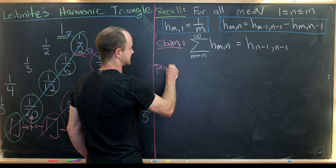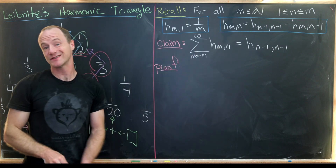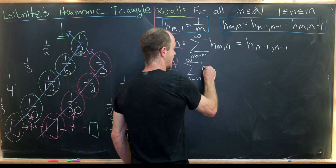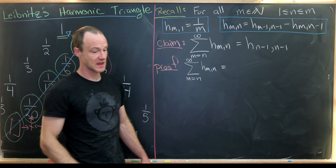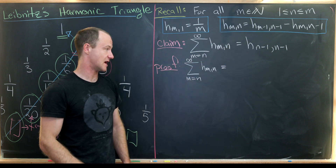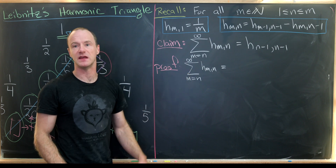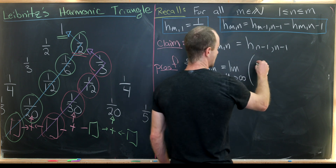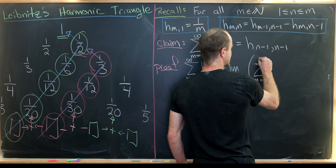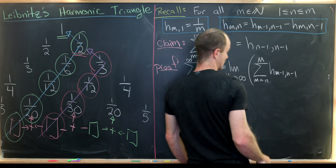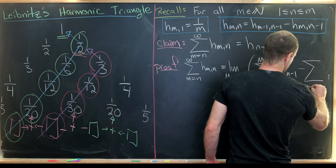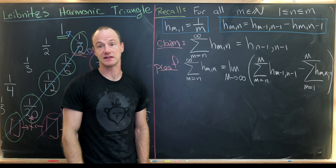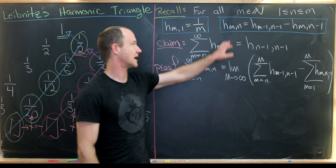By our construction, this turns out to be a fairly quick proof. We take the left-hand side: the sum as m goes from n to infinity of h(m, n). We apply our recursion and convert the infinite sum into the limit of a finite partial sum: the limit as capital M goes to infinity of the sum as m goes from n to capital M of h(m−1, n−1) minus h(m, n−1).